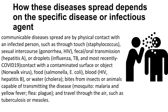According to the World Health Organization, how these diseases spread depends on the specific disease or infectious agent. Some ways communicable diseases spread include physical contact with an infected person, such as through touch (staphylococcus), sexual intercourse (gonorrhea, HIV), fecal or oral transmission (hepatitis A), or droplets (influenza, TB, and COVID-19).